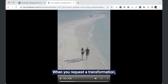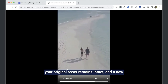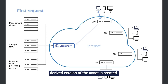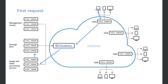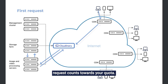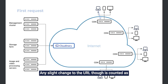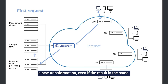When you request a transformation, your original asset remains intact, and a new derived version of the asset is created. Each new transformation that you request counts towards your quota, but because derived assets are cached on a CDN, you won't be charged again for requesting the same URL. Any slight change to the URL though is counted as a new transformation, even if the result is the same.